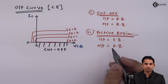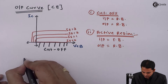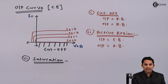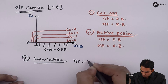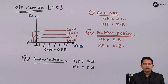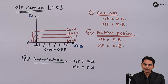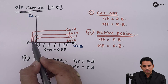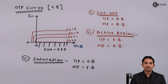Hence there is no amplification of current in common base configuration. The third region is saturation region. For saturation region, input is forward biased and output is also forward biased. As we are applying forward bias on input as well as output, for common base configuration the characteristics will shift towards the y-axis or the negative x-axis, and from this side characteristics will start, giving rise to the saturation region in common base amplifier.